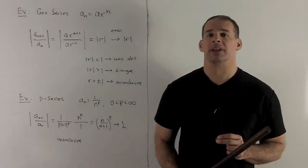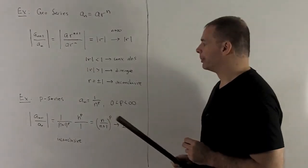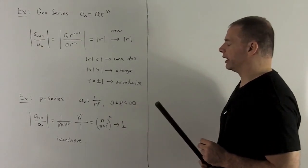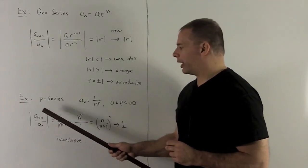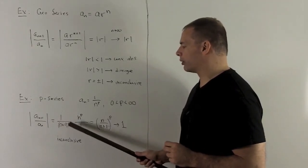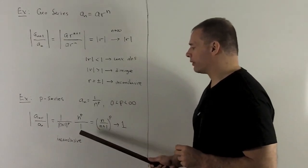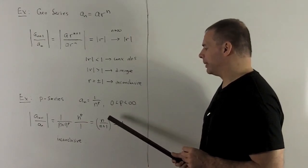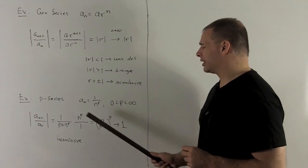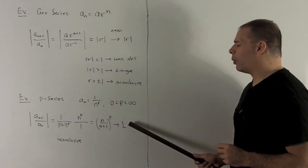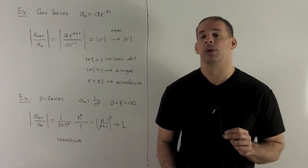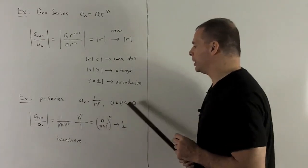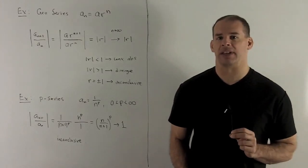At the other end of the spectrum is slow growth: the P-series, where a sub n equals 1 over n to the P, with P between 0 and infinity. The ratio gives a sub n+1 as 1 over (n+1) to the P, and a sub n flipped over as n to the P, so the ratio is n over n+1, all raised to the P. As n goes to infinity, that limit equals 1. So the ratio test gives an inconclusive answer for the entire class of P-series — it has nothing to say about this whole family.